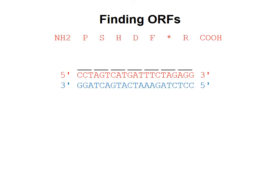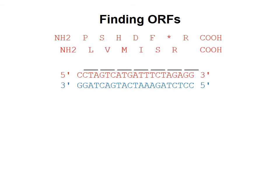Another possible open reading frame is obtained if we shift our codon translation one base to the right. Now we see that the codon CTA encodes for leucine, GTC encodes for valine, and so on — this is the second possible open reading frame. Likewise, a third possible open reading frame exists if we shift the translation another base to the right. So the top strand has three possible open reading frames.